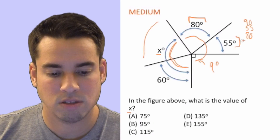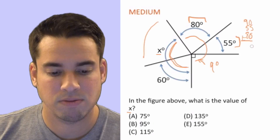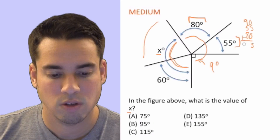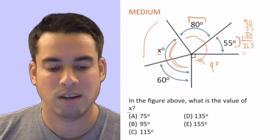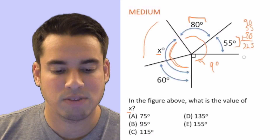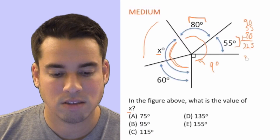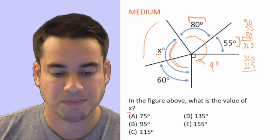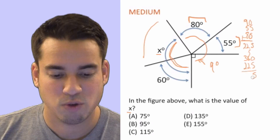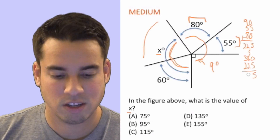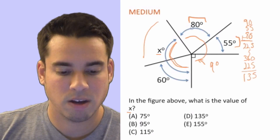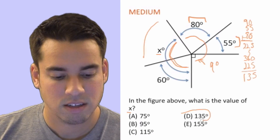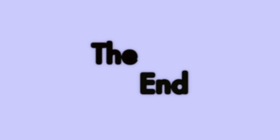So we just add up the known angles: 90 plus 55 plus 80 equals 225. Then we subtract from 360: 360 minus 225 gives us 135. So 135 is our final answer, and that is D.